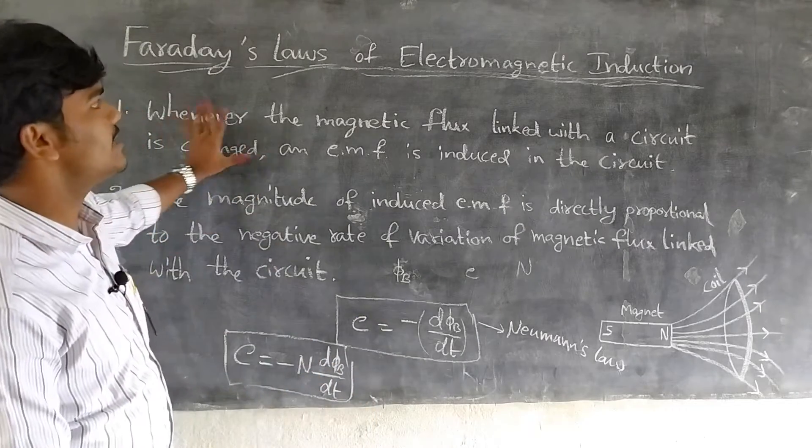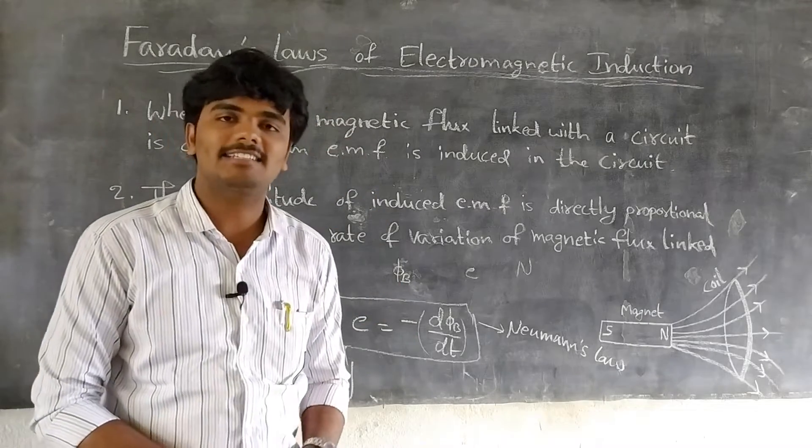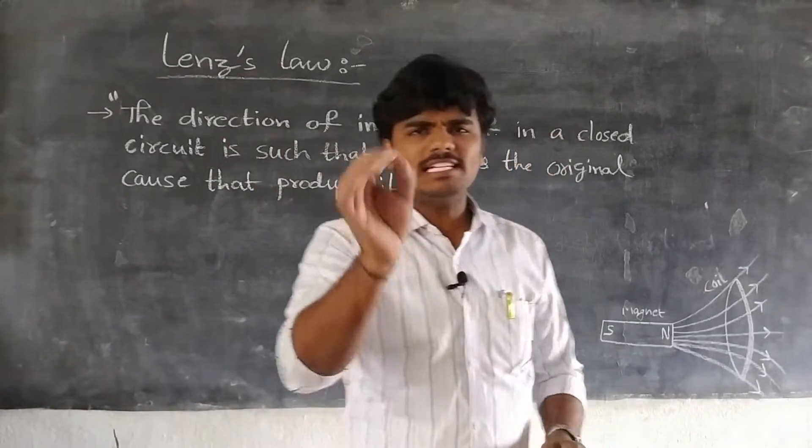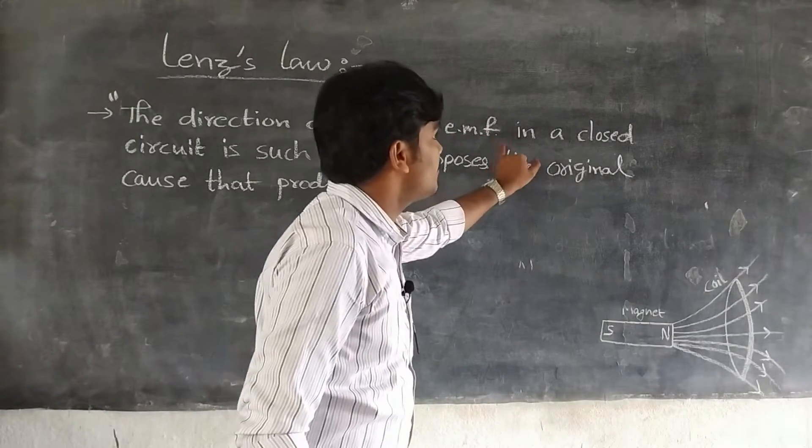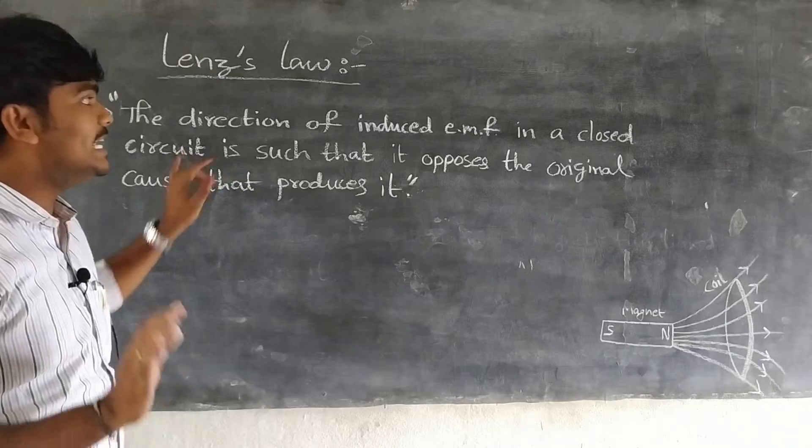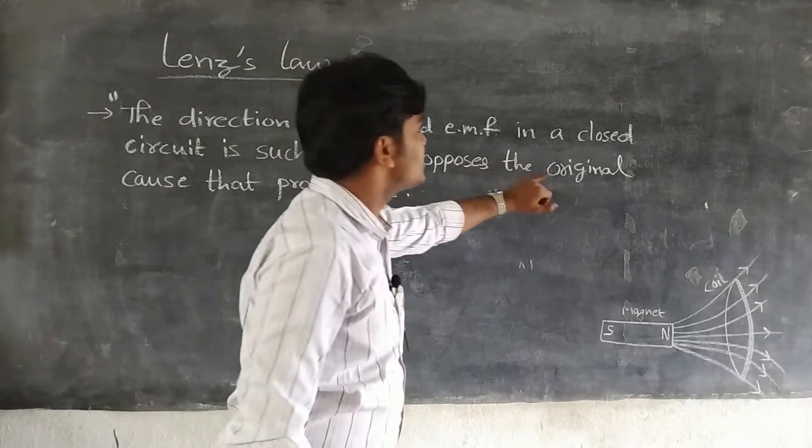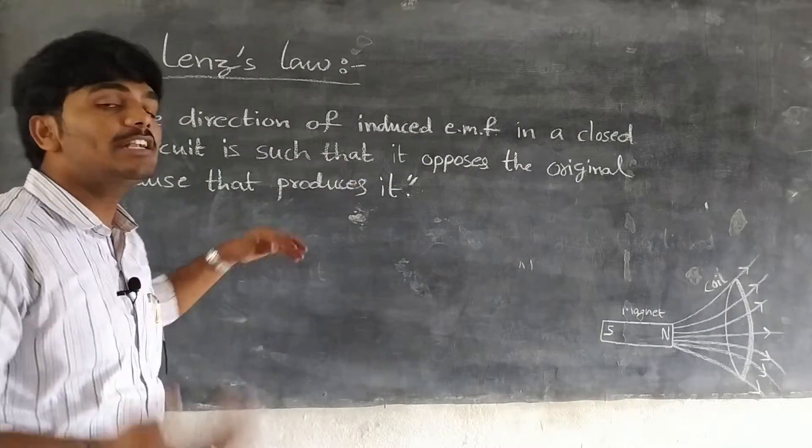So these are Faraday's laws of electromagnetic induction. Now Lenz's law - what it states? The direction of induced EMF in a closed circuit is such that it opposes the original cause that produces it.